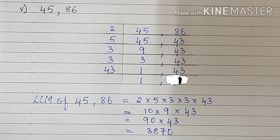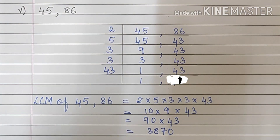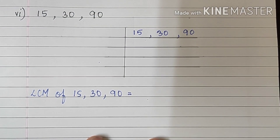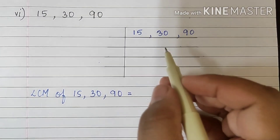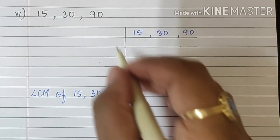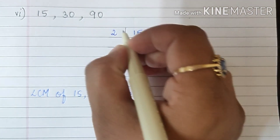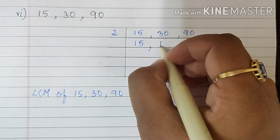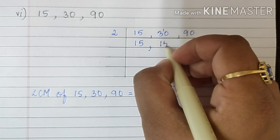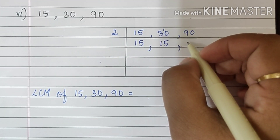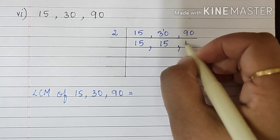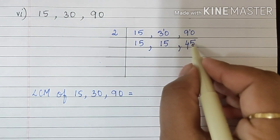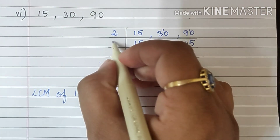Let's continue with the next sum. Sum number 6: 15, 30 and 90. Here these two are even numbers, so we'll begin with 2. 15 will come down as it is. 2 1s are 2, 2 5s are 10, 2 4s are 8, 5s are 10. Now all are having 5 at the end.